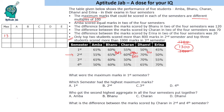We can just multiply to get all marks. 13 into 65 gives us 845. For 55%, subtract 130 to get 715. 60% of 1300 is 780. 70% was already calculated as 910, and 50% is 650. These are the marks of all students in the 2nd semester.